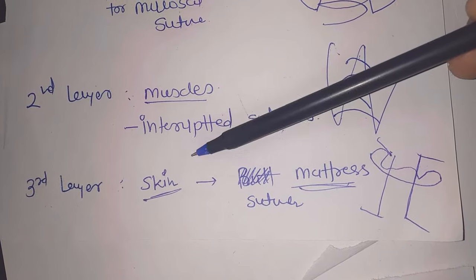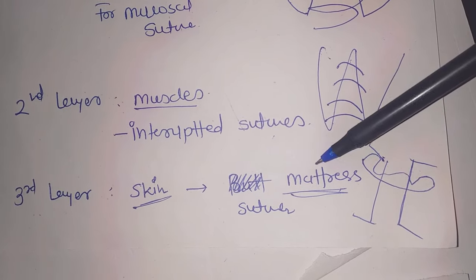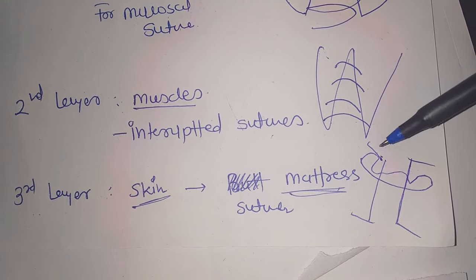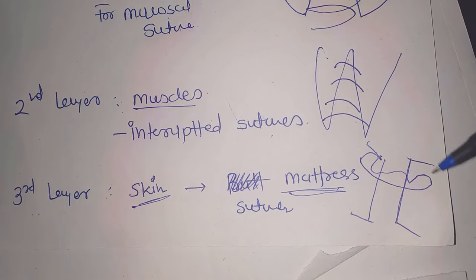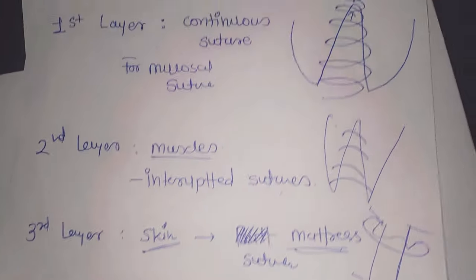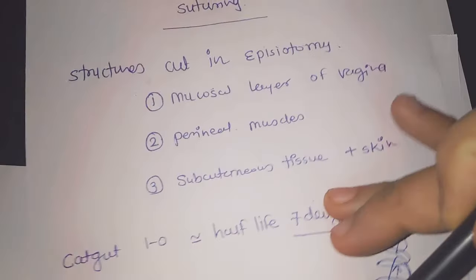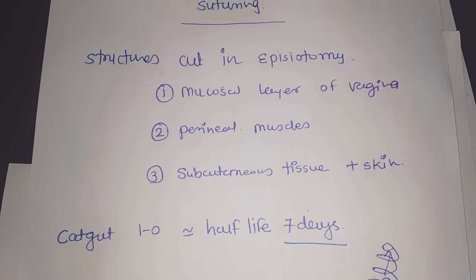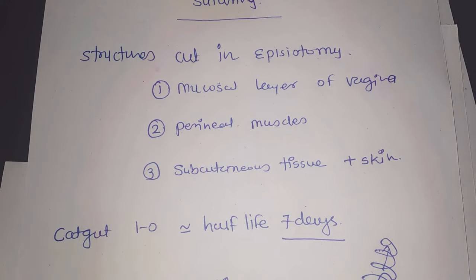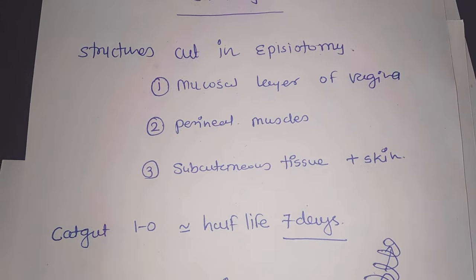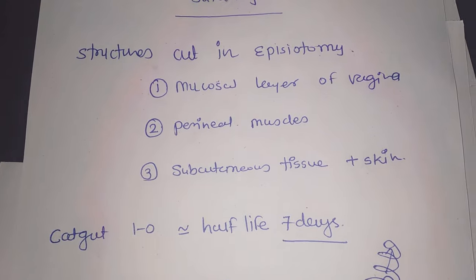The third layer is the skin and subcutaneous tissue. Here we take a mattress suture. So in episiotomy, three layers of structures are cut and three layers are sutured with the help of catgut 1-0. Thank you.